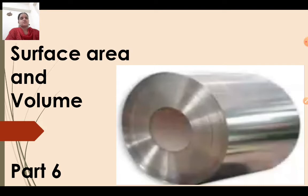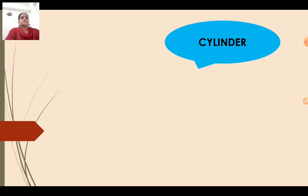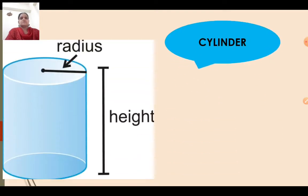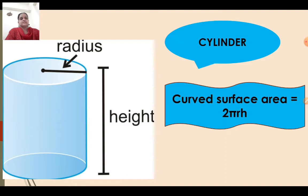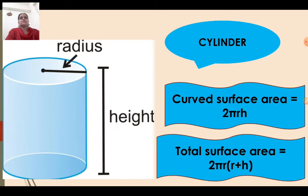So let us revise the formulas first and then we will continue with exercise 13.2. For a cylinder, the top and bottom both are in circular shape. The radius of that circle we will denote as R and height is H. By using that, the curved surface area equals 2πRH, where R is the radius and H is the height. The total surface area equals 2πR(R + H).